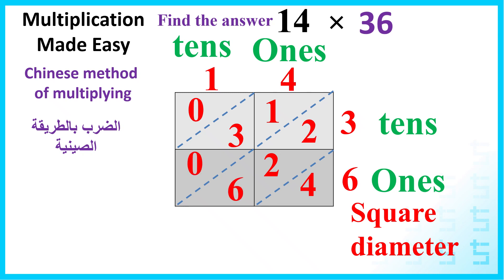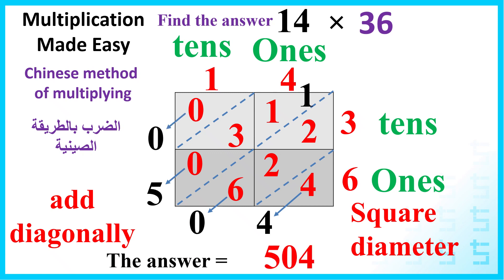6 times 1 equals 6. Now we will add all the numbers diagonally. 4 remains 4. 6 plus 2 plus 2 is 10. We will write 0 and carry 1. 3 plus 1 plus 1 is 5, and 0 remains 0. The answer equals 504.